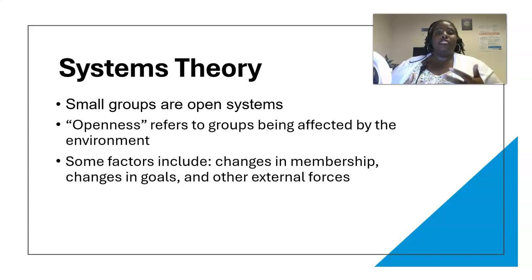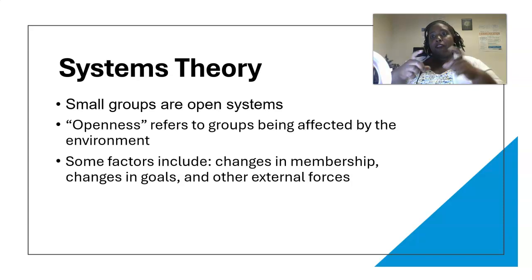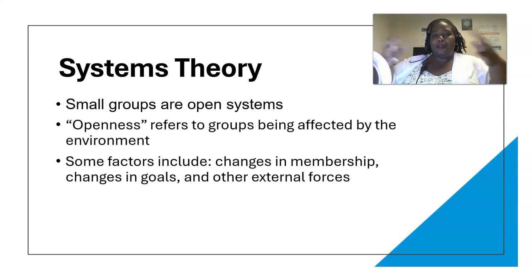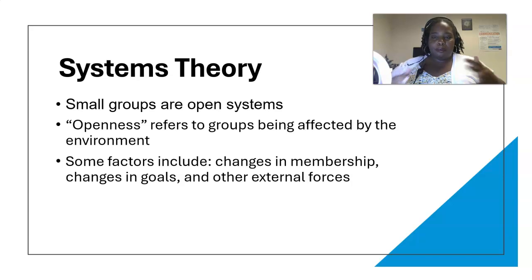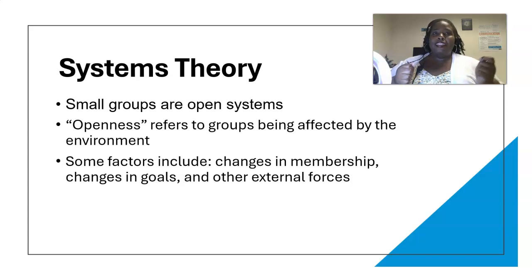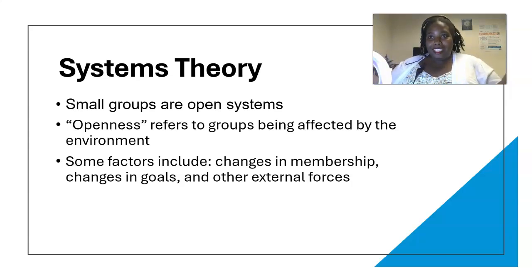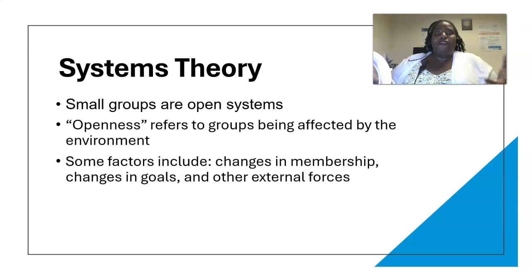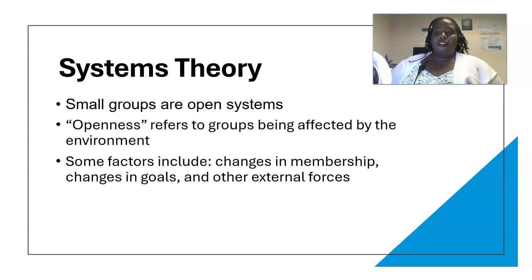Small groups are open systems. Openness refers to the extent to which the group is impacted. As your instructor, I am part of that openness — I give you instructions for your projects and how to conduct yourself in the group. Our department has requirements for what I teach you, which influences your assignments. So you are an example of an open group, affected by the environment, the school, other groups, and me.